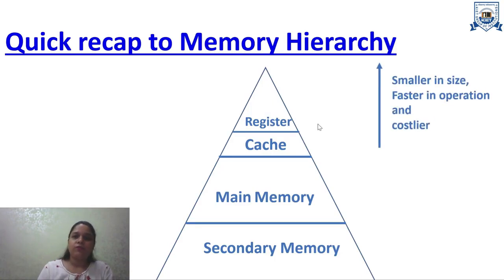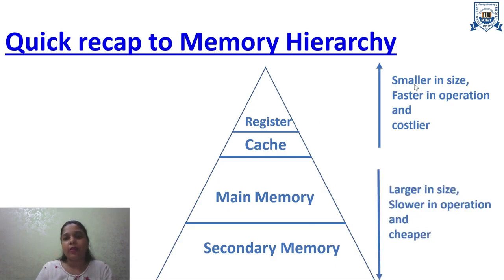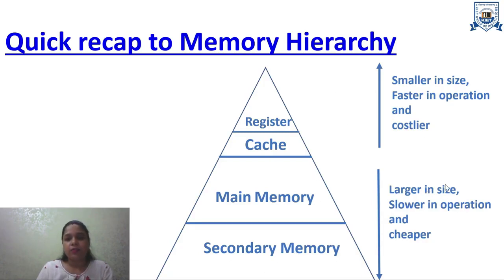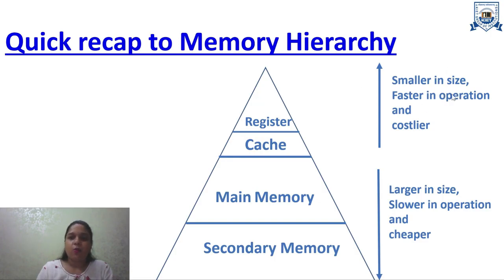There are some properties of this diagram: as we go up, the size gets smaller, operations get faster, and cost increases. While we go down in this hierarchy, the size of the memory gets larger, operations are slower, and the price is cheaper. From this we can conclude that registers are the smallest in size, fastest in operation, and the costliest in the memory hierarchy.